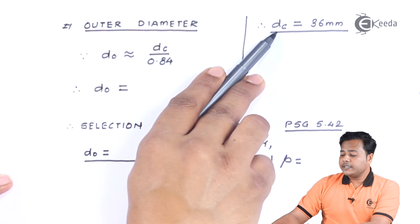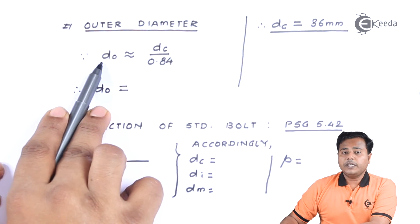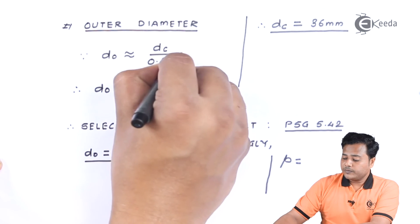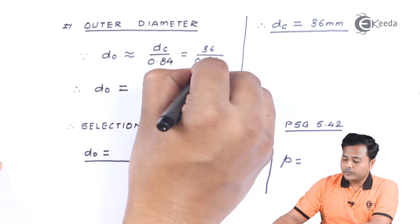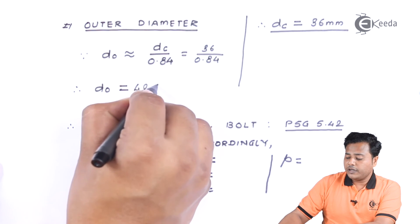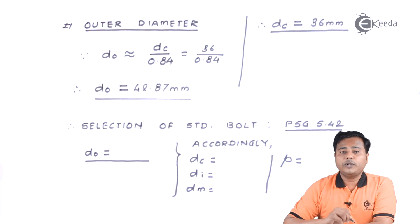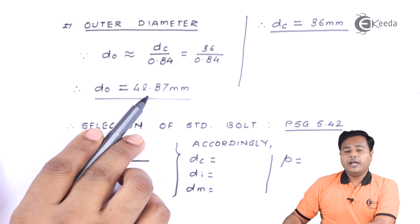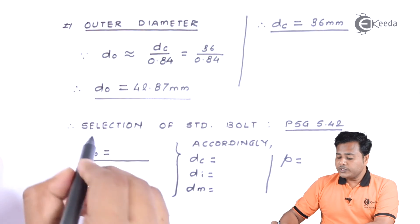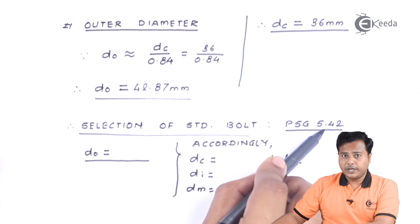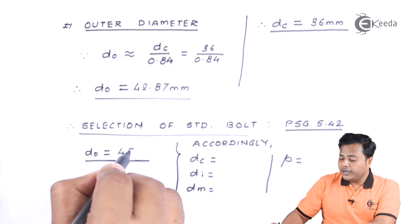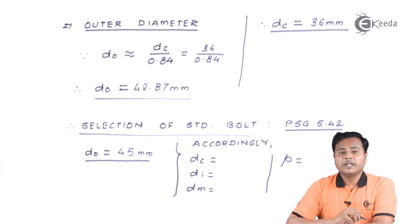The outer diameter, which is the nominal diameter of the bolt, is related to the core diameter by a standard relationship. Solving that expression gives an outer diameter of approximately 42.87 millimeter. Since we cannot manufacture to that precision, we select from the preferred series. Referring to table PHG 5.42 for standard bolts, the next available nominal diameter is 45 millimeter. That is how the bolt is selected.